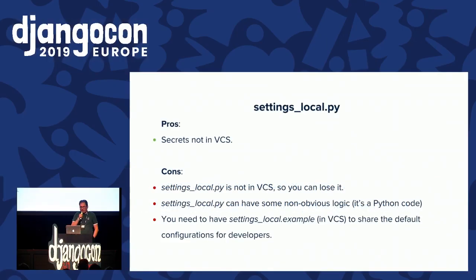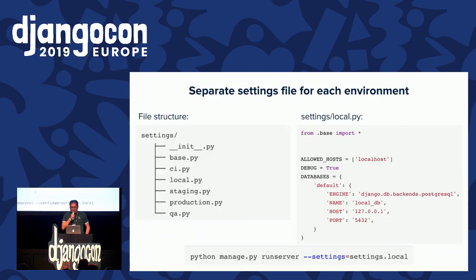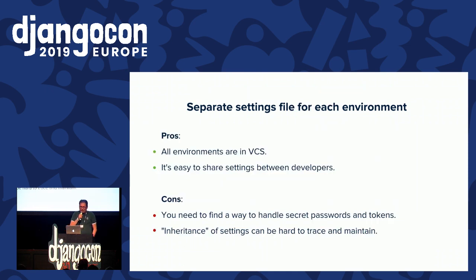This approach partially solves the issue with sensitive data, but still has a lot of disadvantages. The next approach is separate settings files for each environment. With this approach you separate your settings by environment, still having a base file — it's like an extension of the previous method. It solves the issue with different environments in version control, and it's easy to share settings between developers, but you still need to handle secret data and still have this inheritance.